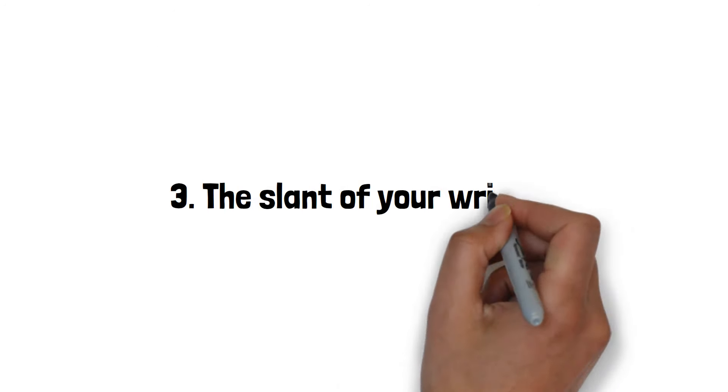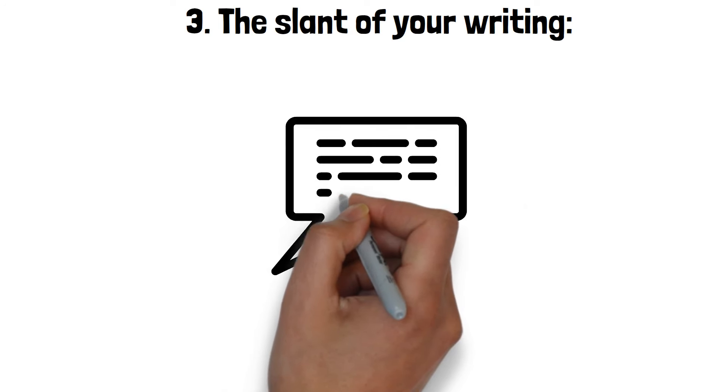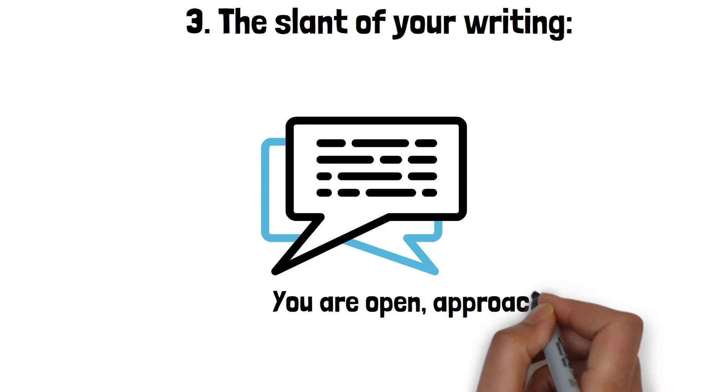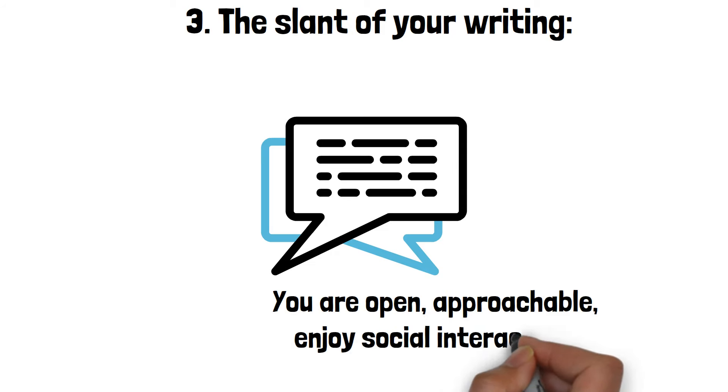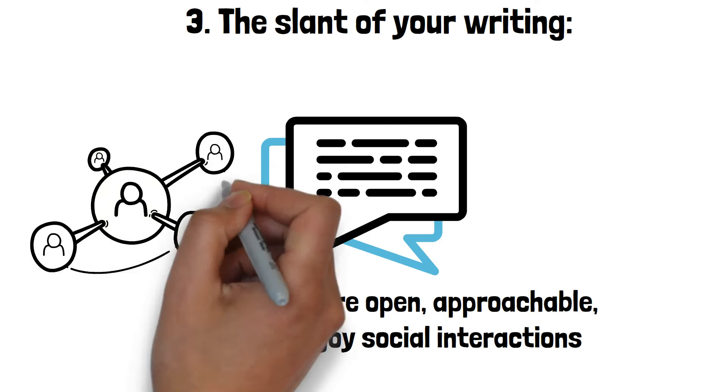The slant of your writing. Right-slanted writing often indicates friendliness and a willingness to communicate. If your handwriting leans to the right, it suggests that you are open, approachable, and enjoy social interactions. You are likely to be expressive and enthusiastic about connecting with others.